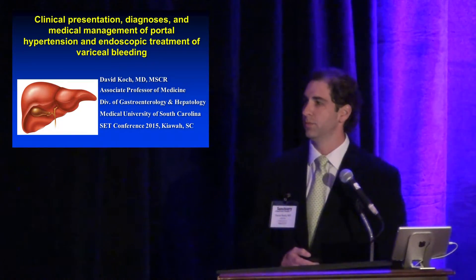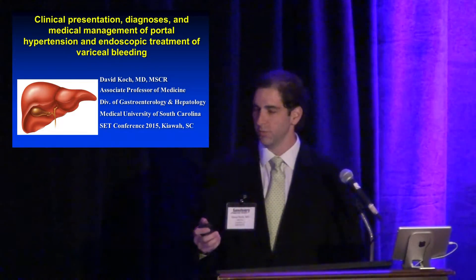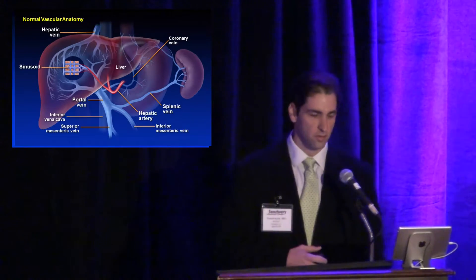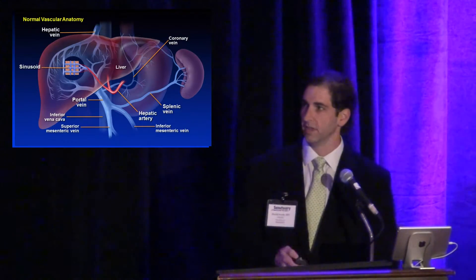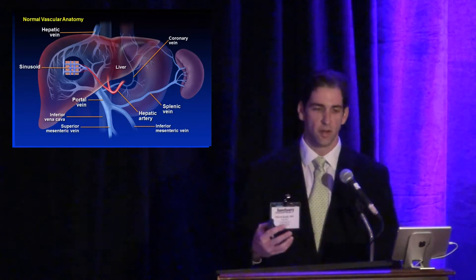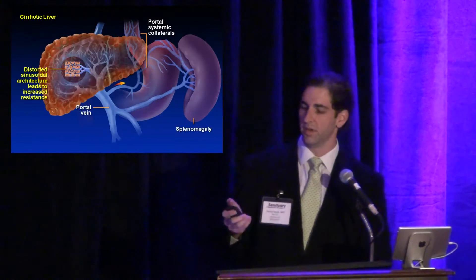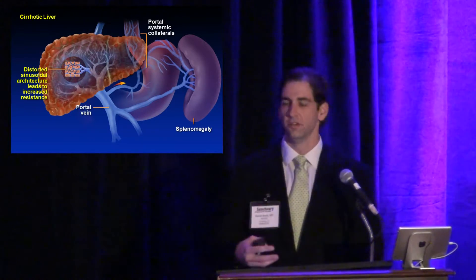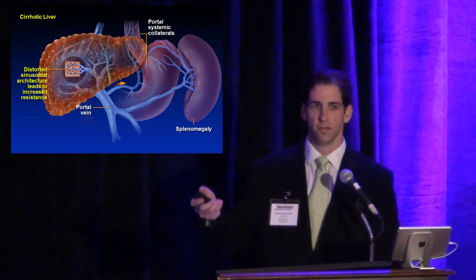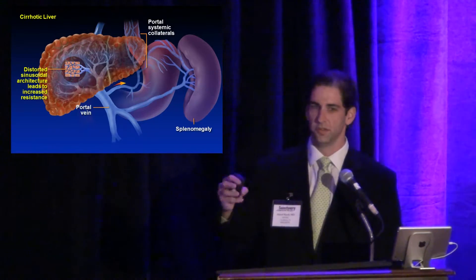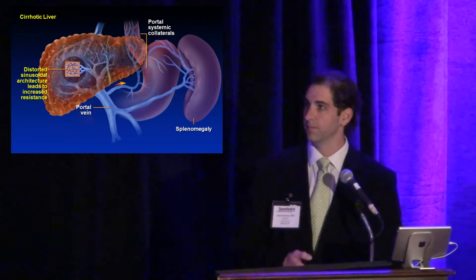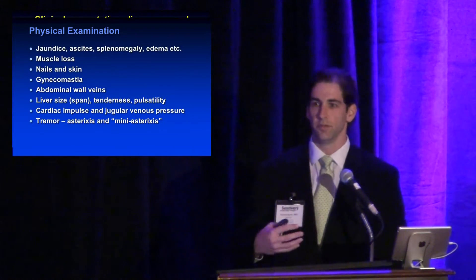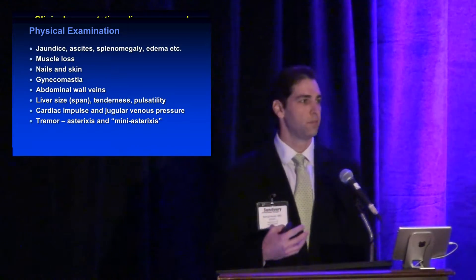In the interest of time, we won't spend much on the normal vasculature — the portal vein flows into the liver, through the sinusoids, and leaves by the hepatic vein to the right atrium. But in cirrhotic patients, intrahepatic resistance increases due to distortion of the sinusoids from regenerative nodule formation and fibrosis. That is one of the major features that drives portal hypertension, leading to collateral circulation forming.